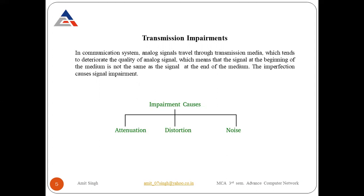The next topic is transmission impairments. In a communication system, analog signals travel through the transmission media, which tends to deteriorate the quality of the signals. This means the signal at the beginning of the medium is not the same as the signal at the end of the medium. This imperfection causes signal impairments.